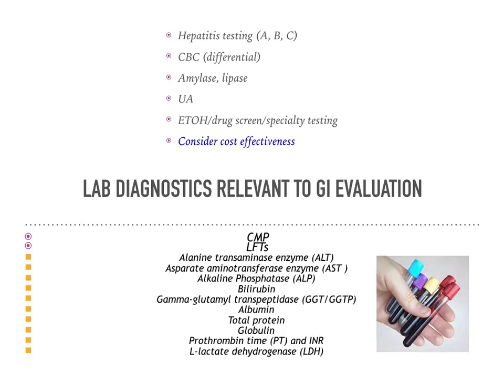When looking at the synthetic function of the liver, we want to look at coagulation labs such as PTT and PT-INR. Also included in the complete metabolic profile is bilirubin, which can tell us how well the liver is functioning. In jaundiced patients, or in newborns, we check bilirubin to make sure they're clearing it appropriately. Alcoholic patients may be jaundiced because they're in fulminant liver failure, and we may need to evaluate those levels to determine what therapies are needed.